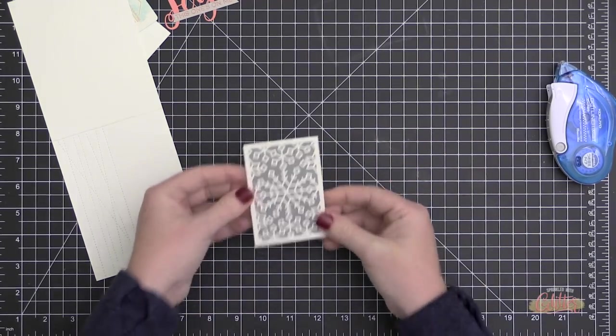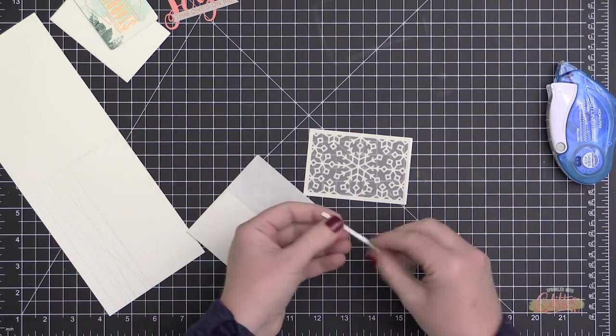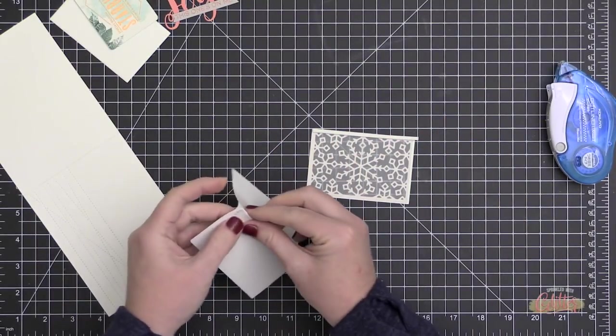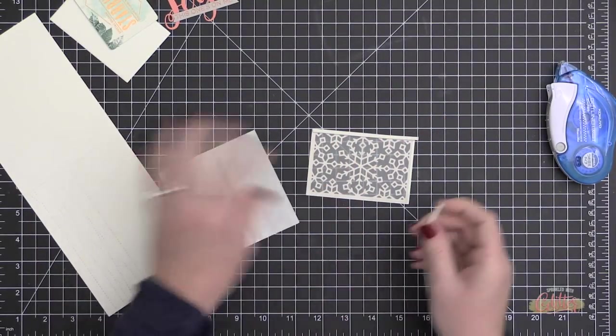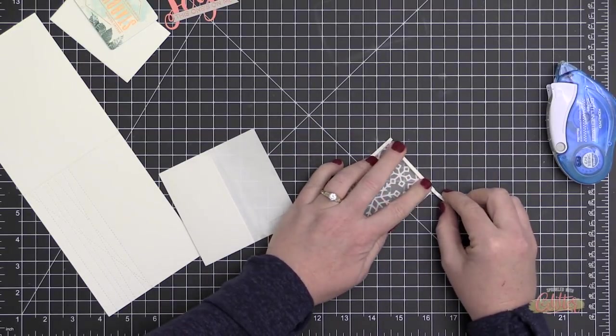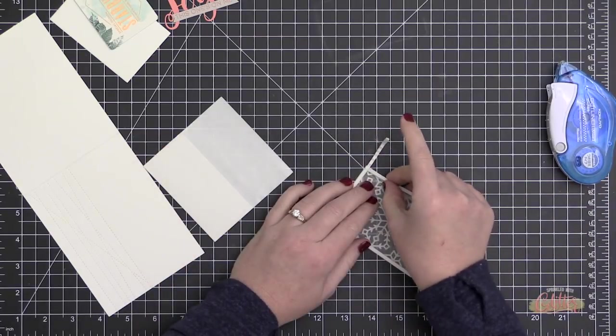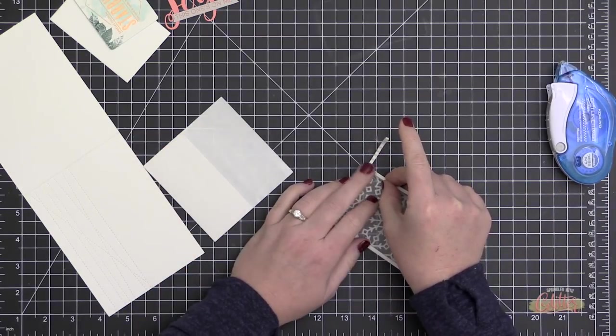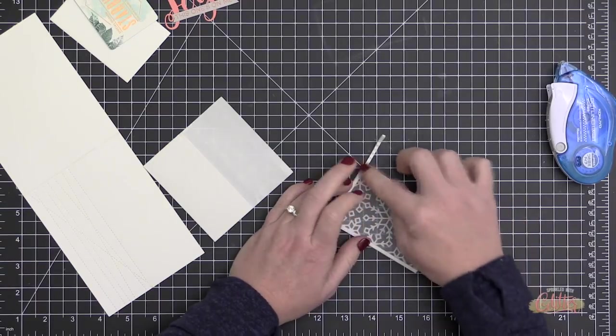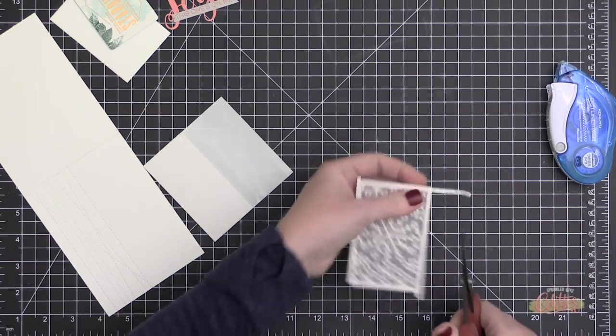Once again, I cut that vellum using the A2 Rectangle Stacks 2 die set from My Favorite Things. Now once again to create my pocket, I'm using these thin foam adhesive strips. If you don't have these thin foam adhesive strips, you can take your wider foam adhesive and trim it down into some really thin strips.